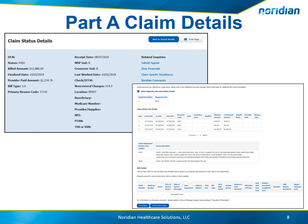For Part A users, the claim status details will provide additional information pertaining to the claim, which include amount paid, bill type, and primary reason code, among other details. The claim diagnosis codes and pointers are also provided. Then the claim line details are provided. If the claim has more than 15 lines, you can use the page numbers below the claim line details to advance to the next set of claim lines.